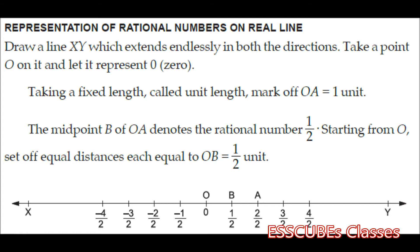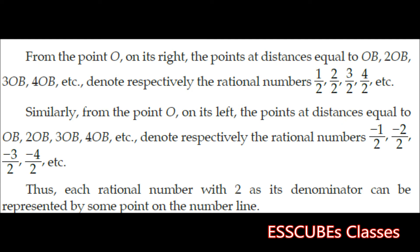From the point O, on its right, the points at distances equal to OB, 2 OB, 3 OB, etc., denote respectively the rational numbers half, 2 by 2, 3 by 2, or 4 by 2. Similarly, from the point O on its left, the points at distances equal to OB, 2 OB, 3 OB will represent minus half, minus 2 by 2, minus 3 by 2, minus 4 by 2, etc. Thus, each rational number with 2 as its denominator can be represented by some point on the number line.